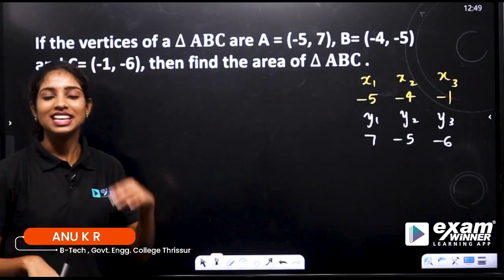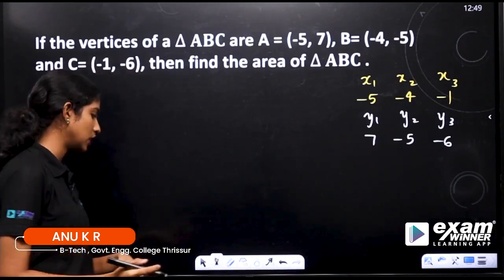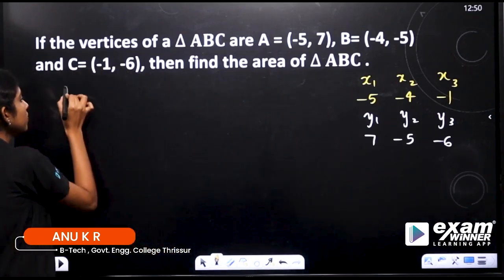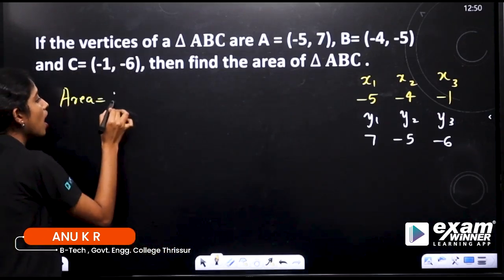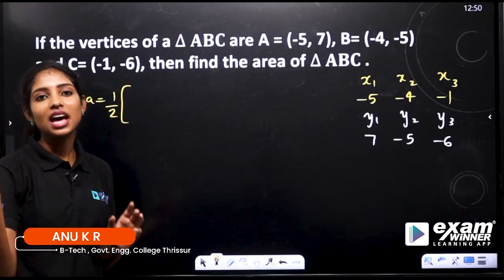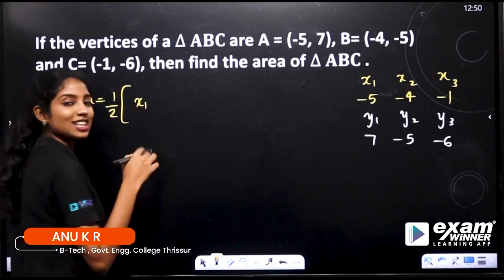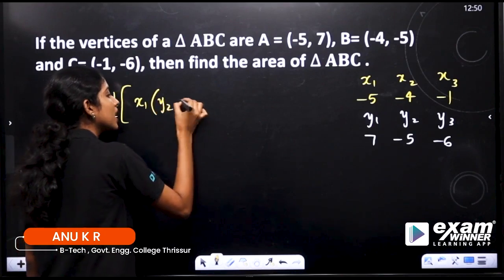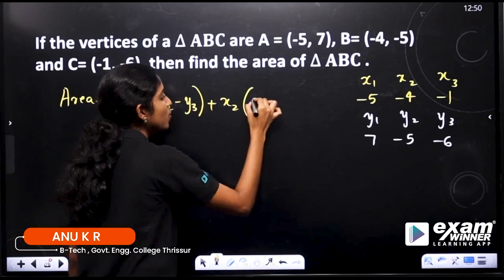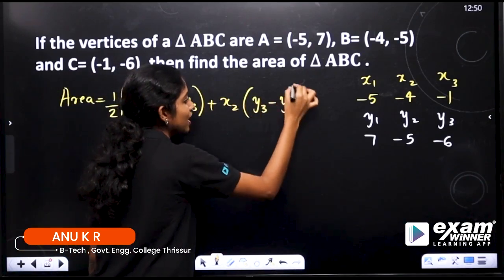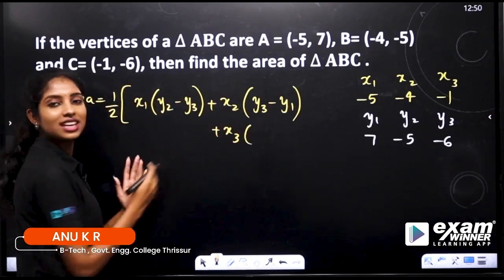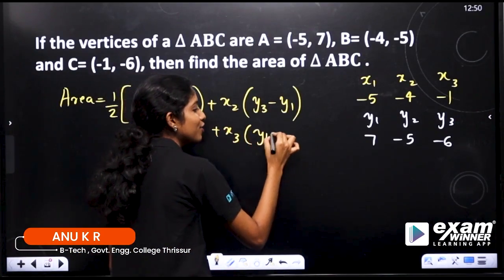Now we will find x1 and y1. We will find the area of triangle equation. Area is equal to half into x1 into y2 minus y3, plus x2 into y3 minus y1, plus x3 into y1 minus y2.